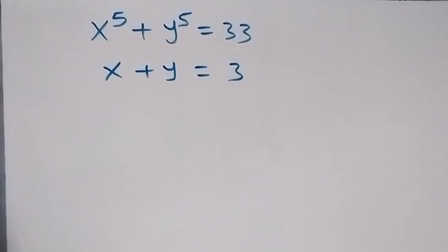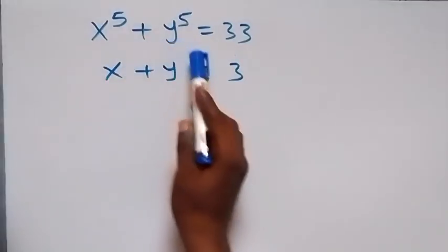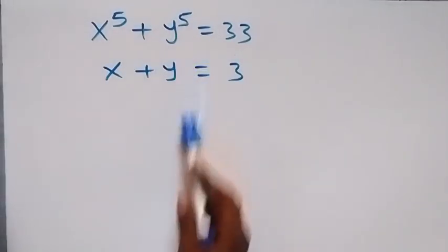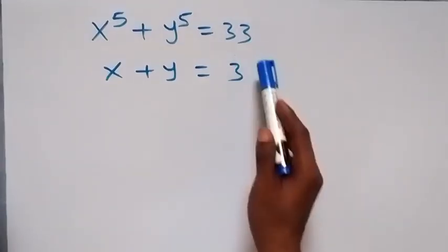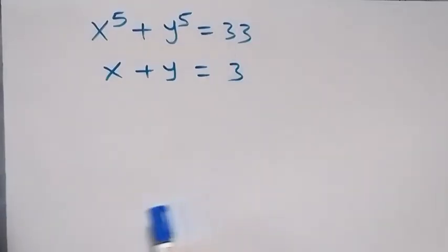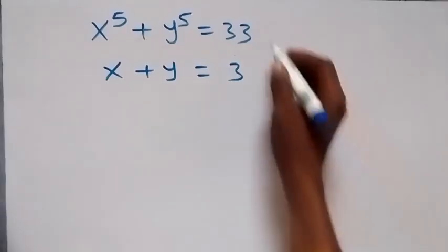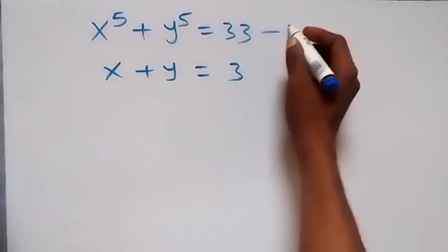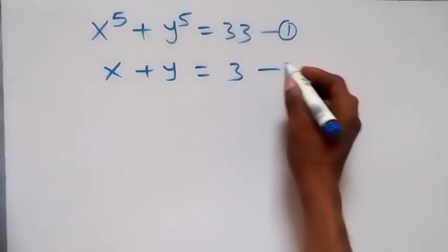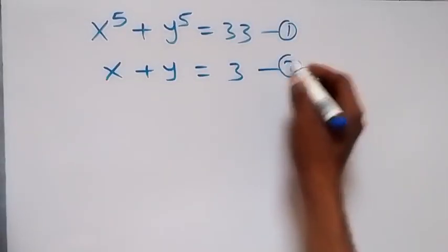Hello, you are welcome. How to solve this nice system of equations: we have x raised to power 5 plus y raised to power 5 equals to 33, and also x plus y equals to 3. Let's label this as equation 1 and this as equation 2.